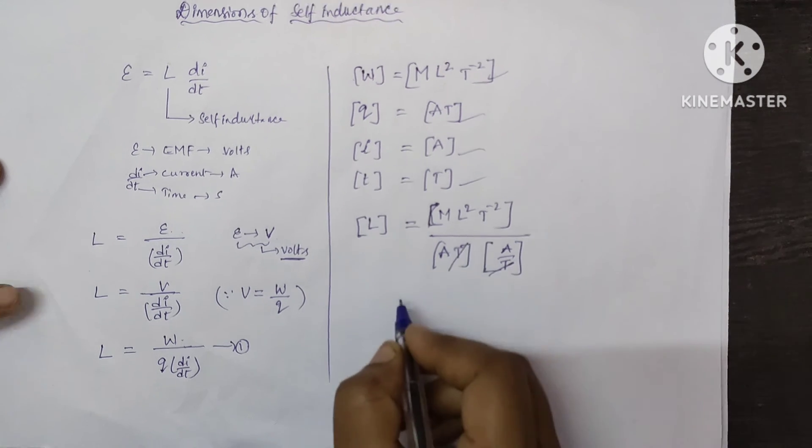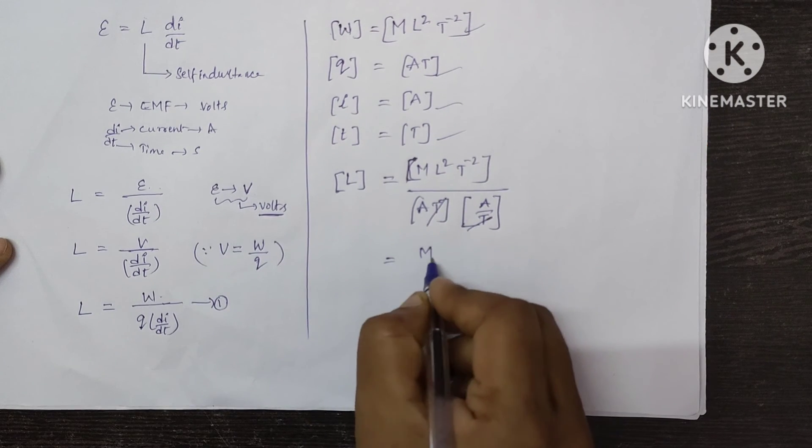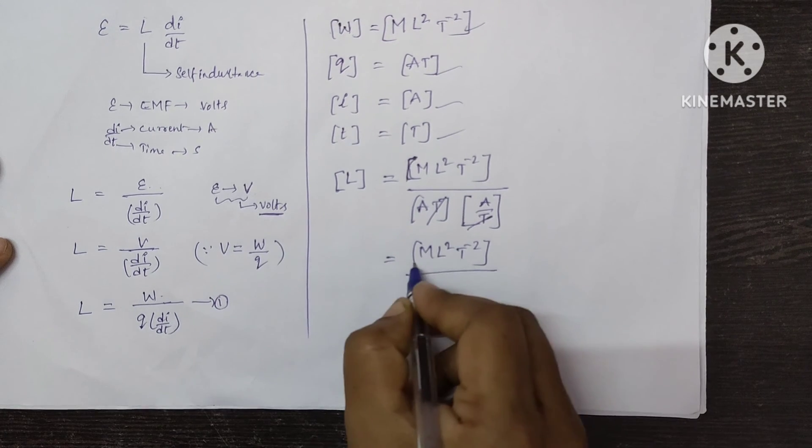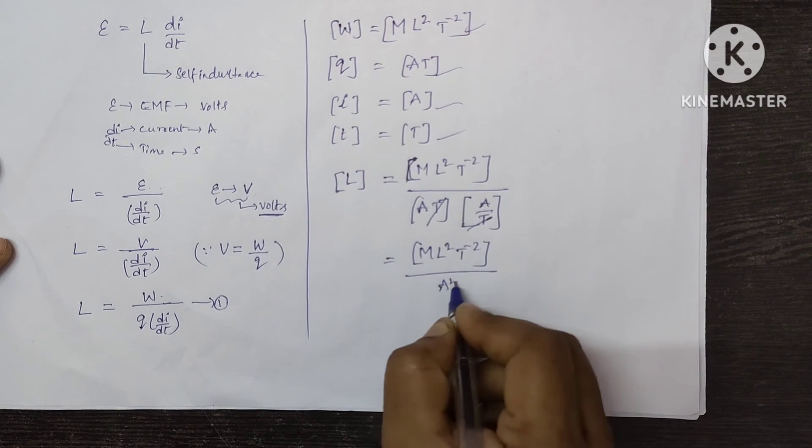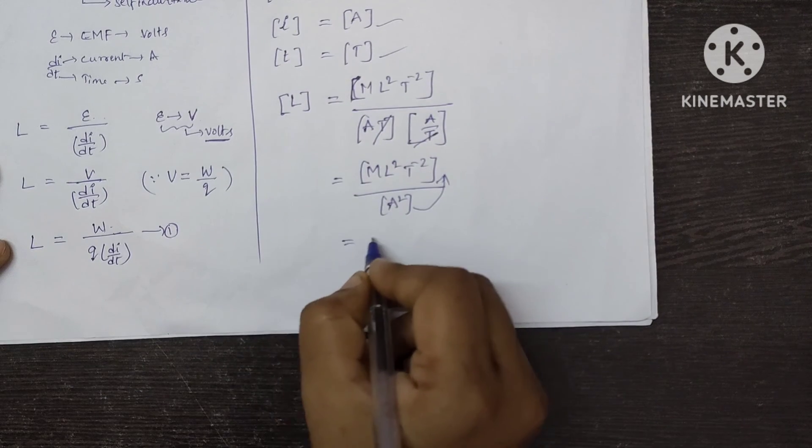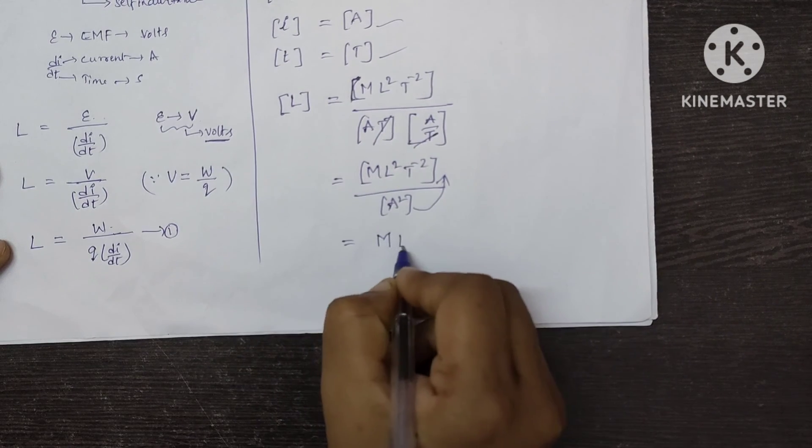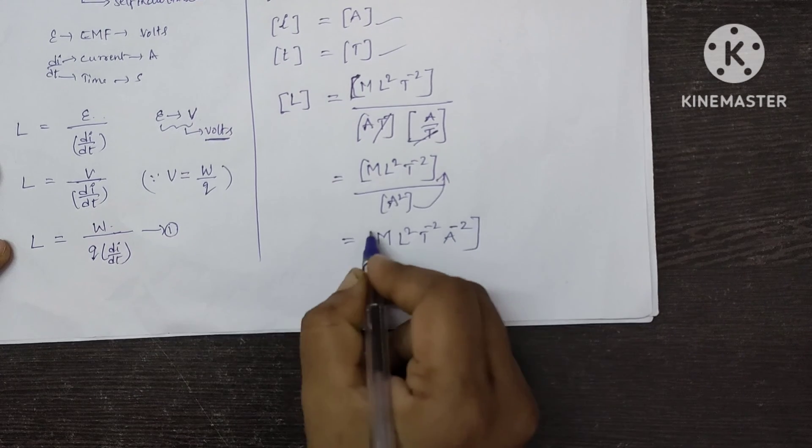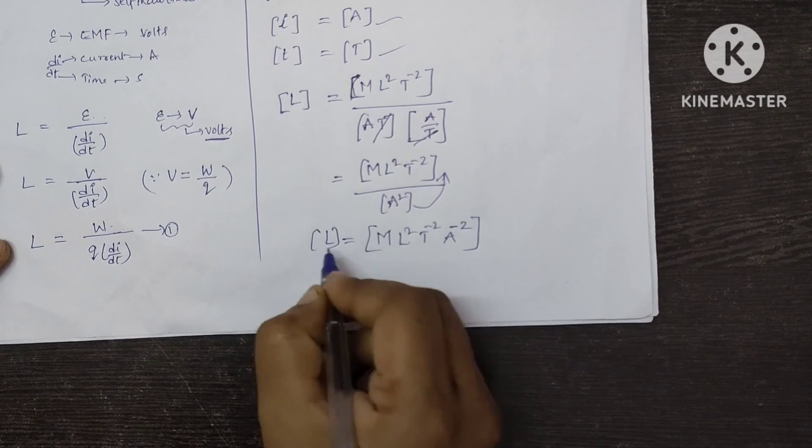Now here this T and T will get cancelled. The remaining terms M L square T power minus 2 divided by A into A, A square. Now write this in the numerator, which becomes as a negative. M L square T power minus 2 A power minus 2. This is the dimensional formula for the self-inductance.